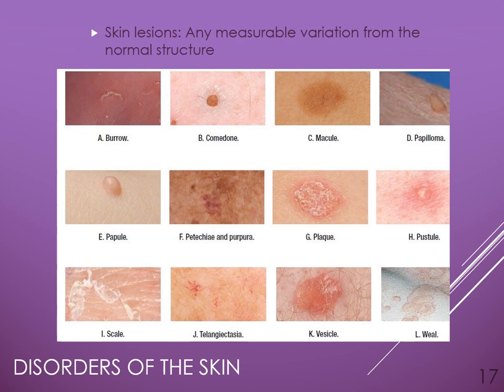Some interesting statistics about skin grafts: four acres of skin can be grown in a lab from one square inch of foreskin. Scientists in the lab are now also able to grow artificial skin using a combination of silicone and collagen that comes from cows.